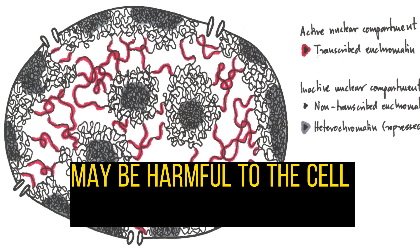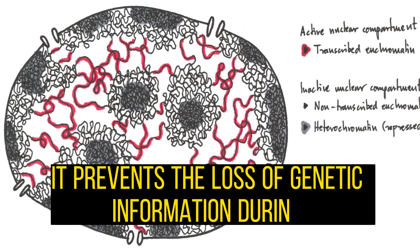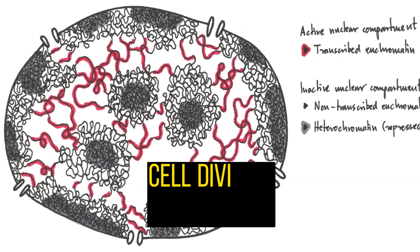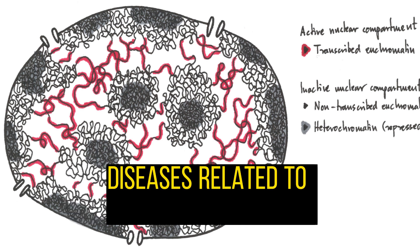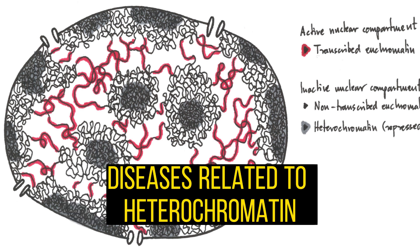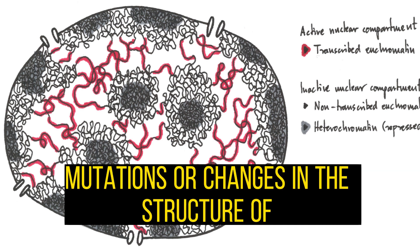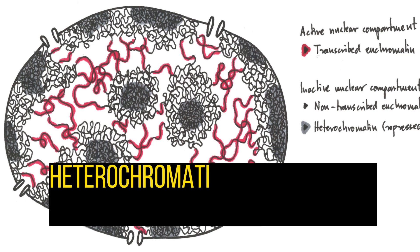Heterochromatin helps to silence genes that are not needed or may be harmful to the cell. It prevents the loss of genetic information during cell division and protects the genome from damage.